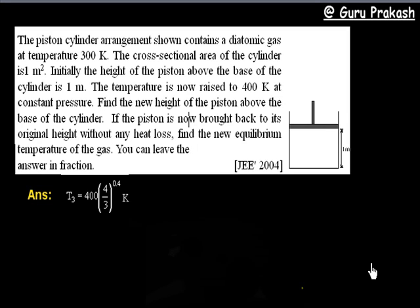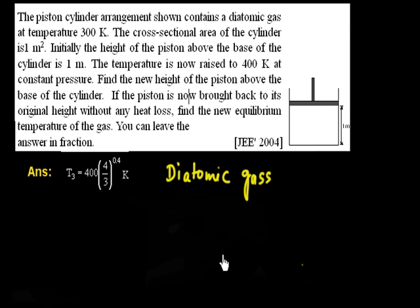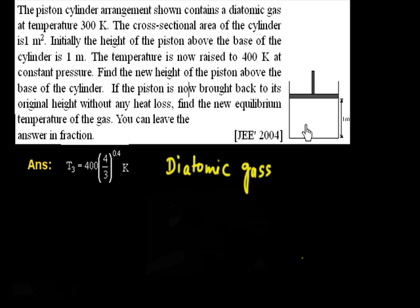Let us discuss this problem. We have a piston-cylinder arrangement — this is the cylinder and this is the piston. The initial height of the piston from the base is one meter, and this contains a diatomic gas at temperature 300 Kelvin. The area of the piston is also given as one meter square.